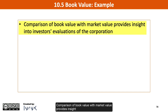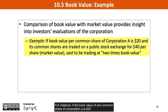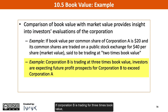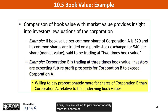Comparison of book value with market value provides insight into investors' evaluations of the corporation. For instance, if the book value of one common share of Corporation A is $20, and its common shares are traded on a public stock exchange for $40 per share — the market value — Corporation A is said to be trading for 2 times book value. If Corporation B is trading for 3 times book value, investors are indicating that the future profit prospects for Corporation B are higher than those for Corporation A. Thus, they are willing to pay proportionately more for shares of Corporation B than Corporation A, relative to the underlying book values.